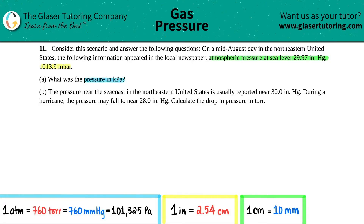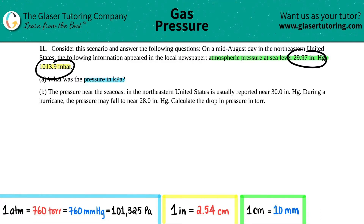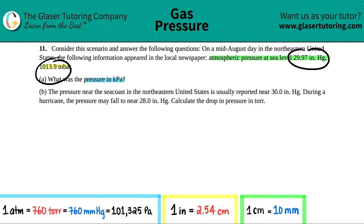What is the pressure in kilopascals? Now, this is a bit tricky. The newspaper lists 29.97 inches of mercury and 1013.9 millibar — these two units of pressure are equivalent to each other. It's not like hours and minutes where you'd add them together.